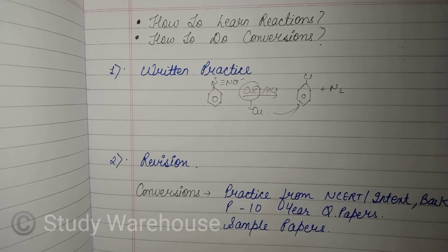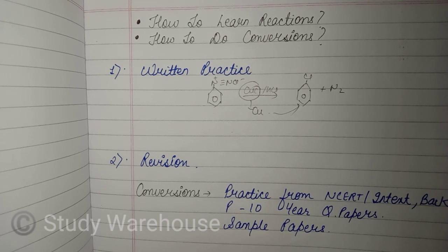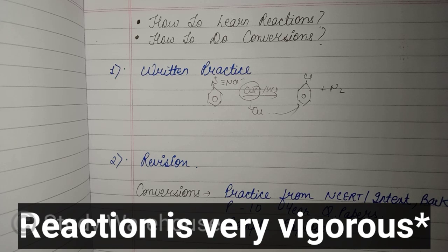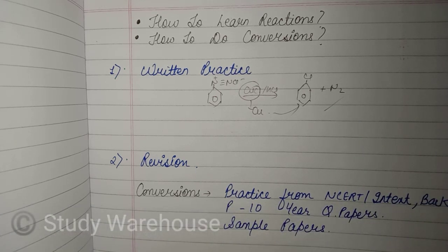One question that is also asked is which reaction would be faster. Gattermann's reaction is faster because powdered form of copper is used, which has a larger surface area, and hence the reaction is faster. Similarly, you can learn the Balz-Schiemann reaction as well, which is used for fluorine and is a different kind of reaction because fluorine is highly reactive.